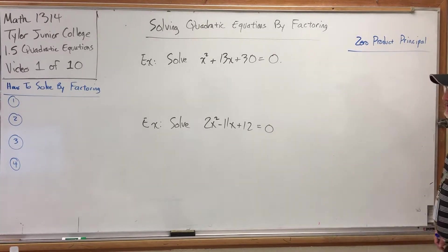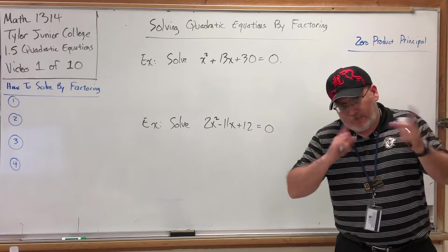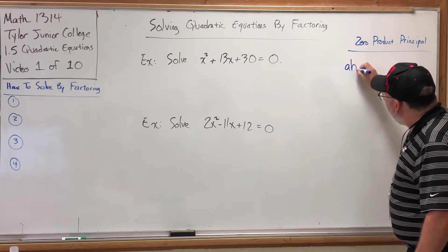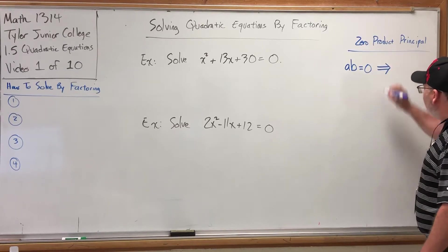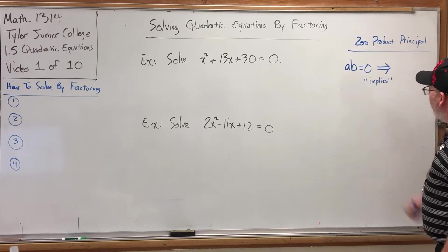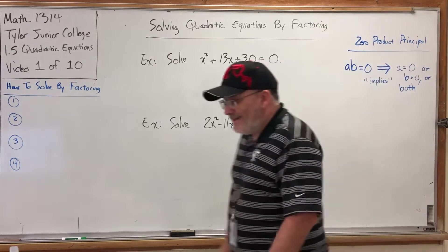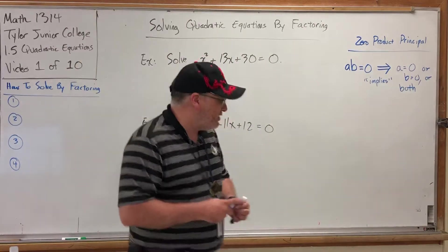So what is the zero product principle? Well, it basically says what we just said. If you multiply two things and get zero, then one or both of those things must be zero. Algebraically, it looks like this. If you have a product equal to zero, symbol you might not be familiar with. It's a double-lined arrow. It is a symbol for the word implies. So if a product is equal to zero, that implies that the first factor is zero or the second factor is zero or both because they might both be zero. And again, in English, it basically says if you multiply and get zero, then one of the numbers you started with had to be zero.